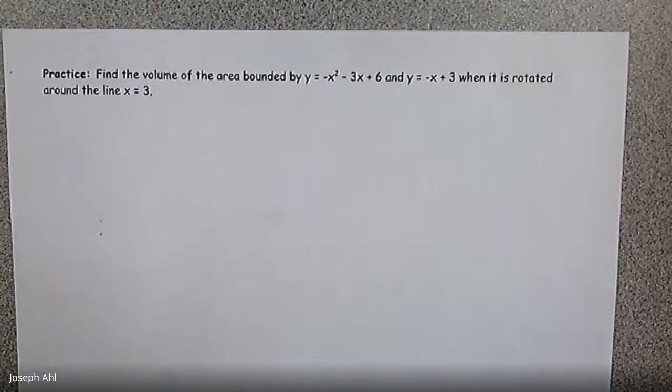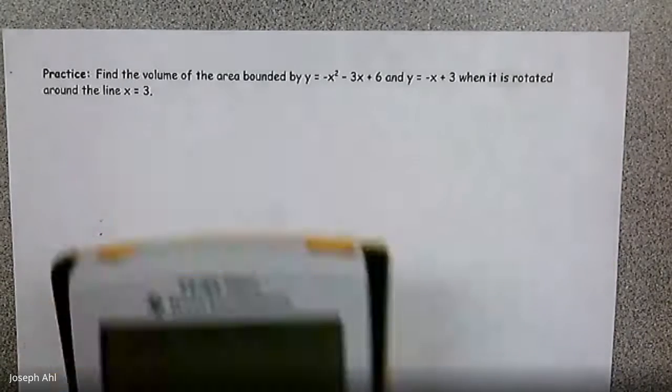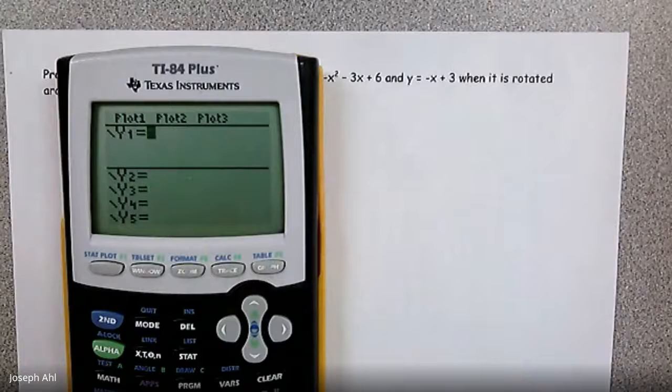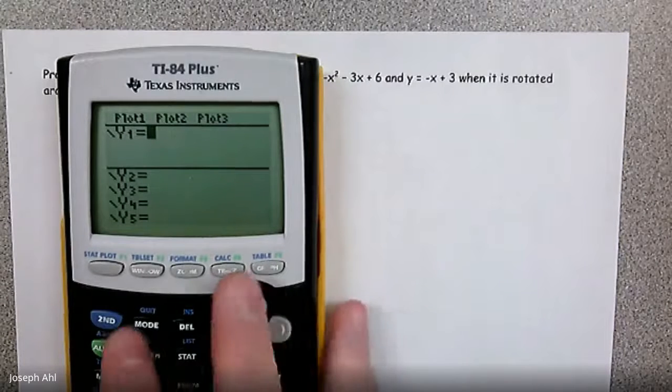So when we're talking about rotating areas around lines, I know we're pretty typically used to seeing the x and the y axes, but certainly vertical and horizontal lines are not out of the realm of possibilities when it comes to doing this type of calculating of volumes. So let's go ahead and actually graph these real quick, just so we can kind of get an idea as to where these functions are located in relationship to the line x equals 3.